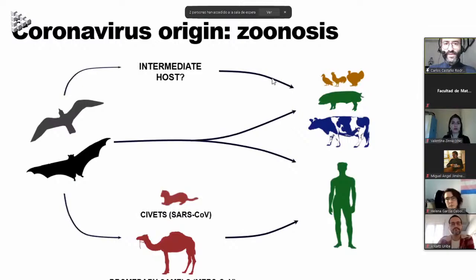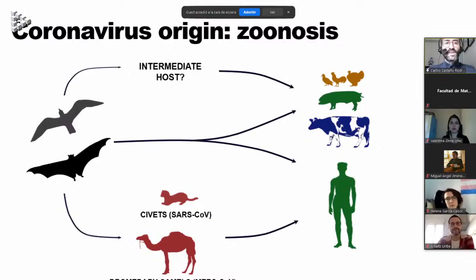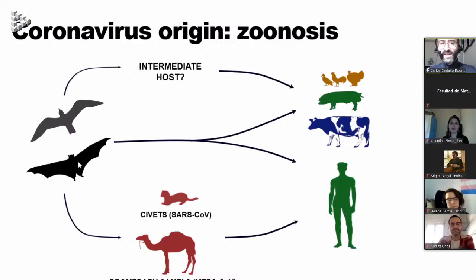How do coronaviruses originate? There are many theories, but the scientific community stated many years ago that coronaviruses, like many other pathogens, originate by a phenomenon called zoonosis — a process by which a virus is transmitted from one species to an individual of another species, where it adapts and changes to infect other individuals of the new species. This can happen directly from the original host or through an intermediate host, as was the case of SARS and MERS-CoV.